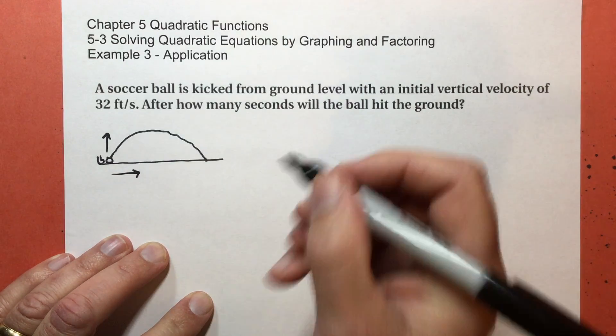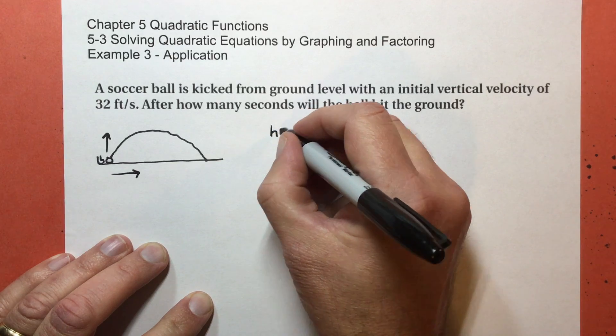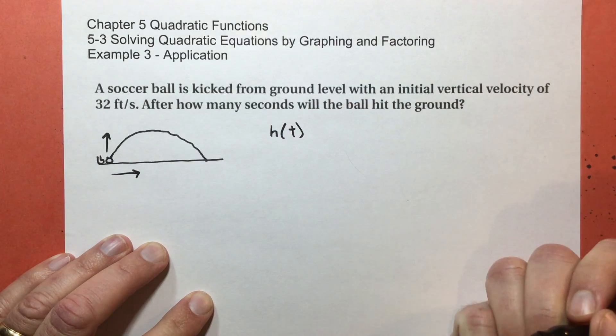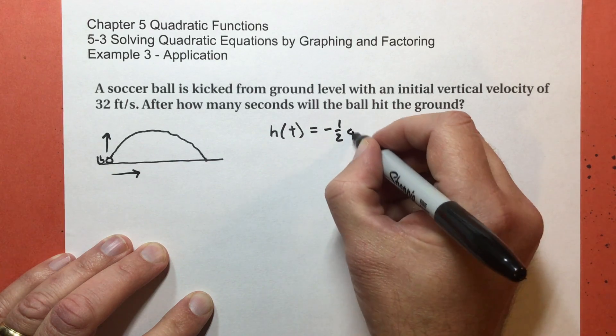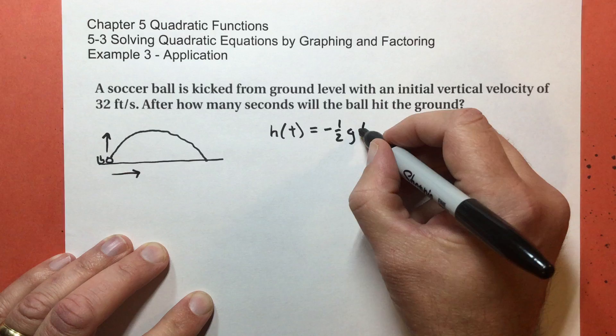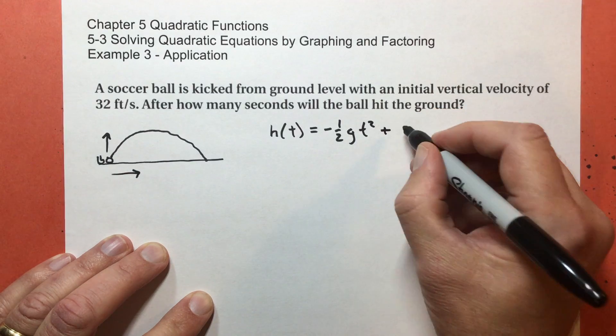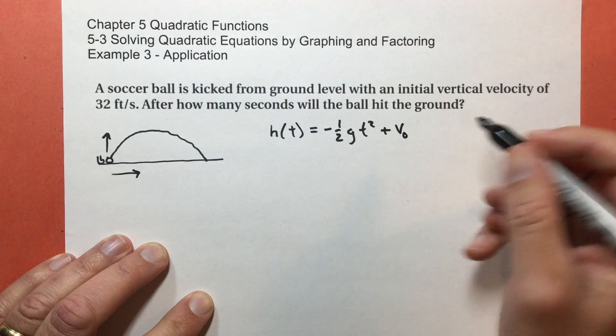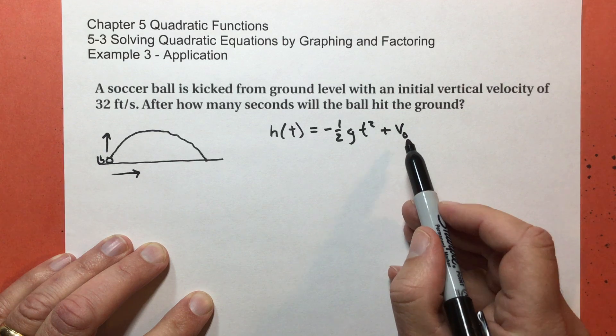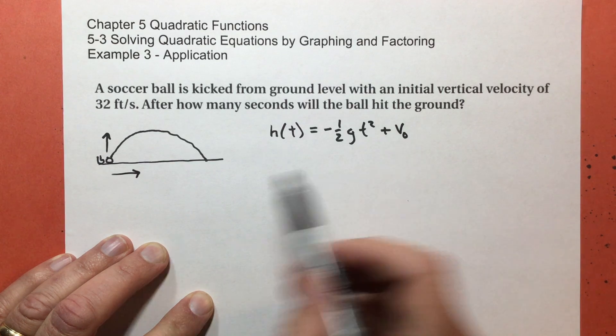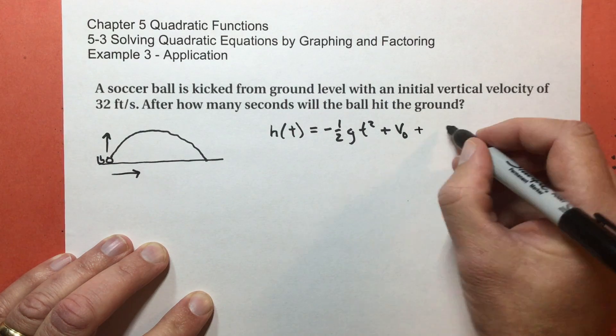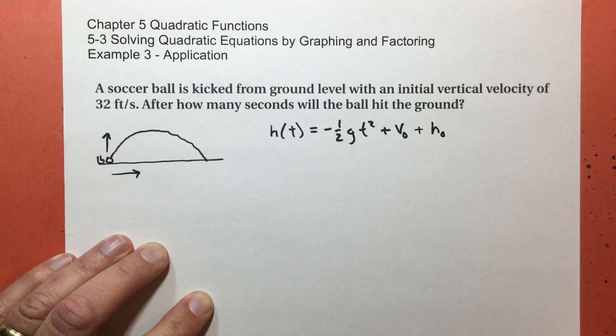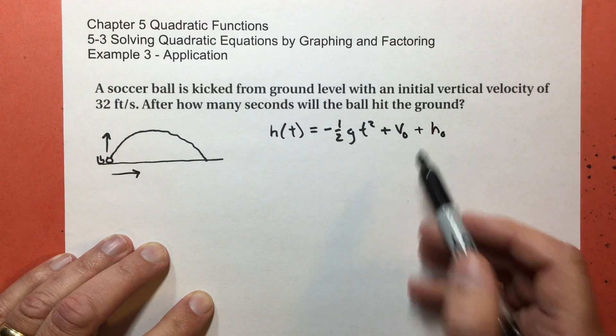So this is what the formula says. The height at time t in seconds is going to be negative one-half g times t to the second power plus the initial velocity. That's velocity at time zero. So that's the velocity that the person kicking it gives it going up, plus the initial height.